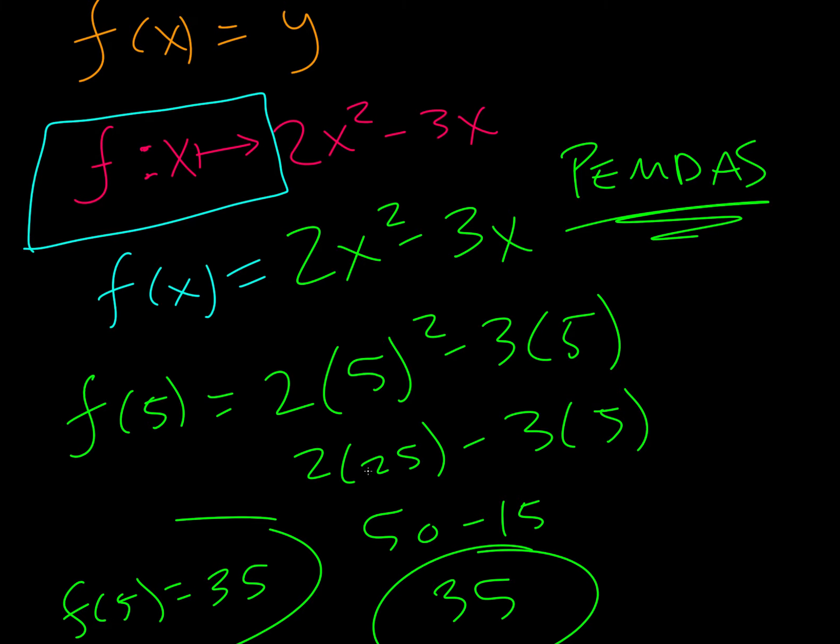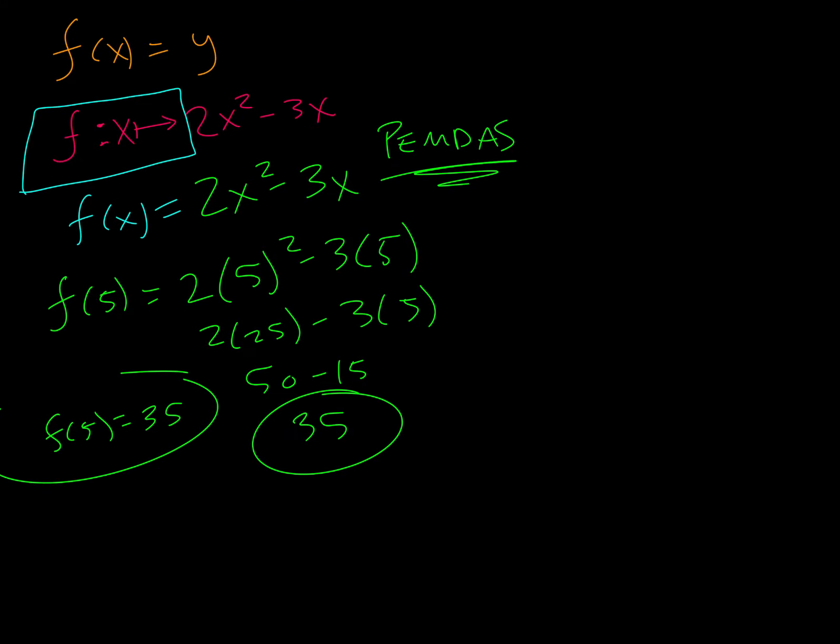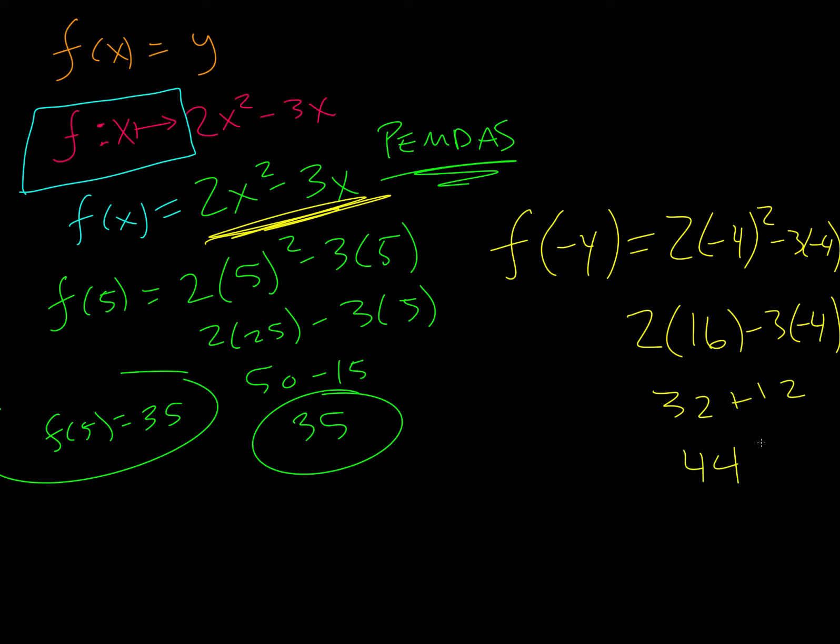Now, for the same function, they want us to do f of negative 4. So once again, we're just going to replace all the x's with negative 4's. So we square that. So we get 2 times 16. Now we multiply. And 44. So f of negative 4 is 44.